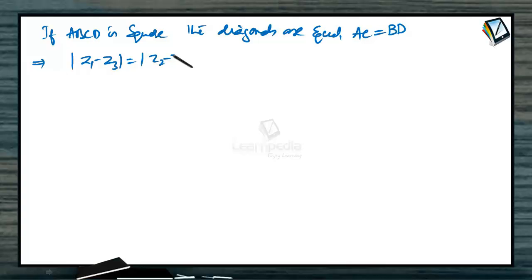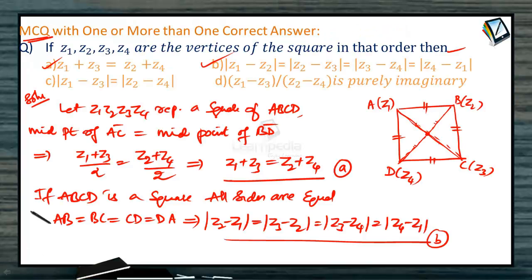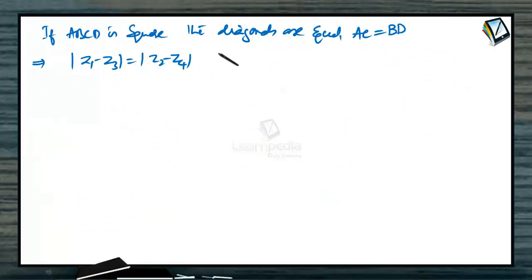Next, also what we can have is since if ABCD is a square, the diagonals are equal. When the diagonals are equal, that is AC equals BD. When AC equals BD, then AC diagonal equals mod of Z1 minus Z3, which equals mod of Z2 minus Z4. In fact, this is given directly here: mod Z1 minus Z3 equals mod Z2 minus Z4. Therefore, option C is also correct.